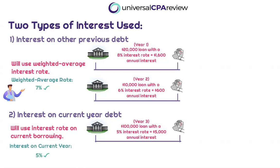To apply the weighted average interest rate, consider this quick example: in year one, there's a $20,000 loan at 8% interest, giving $1,600 in annual interest. In year two, there's a $10,000 loan at 6% interest, giving $600 in annual interest. Since this is debt not associated specifically with the construction project, we take the weighted average interest rate — 8% plus 6% divided by two — giving us a weighted average rate of 7%.